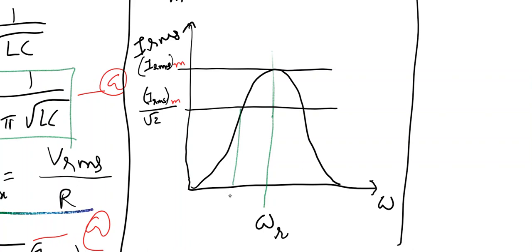So let us label them as omega 1 and omega 2. So when the source angular frequency becomes either omega 1 or omega 2, current will assume this value I_rms max by root 2, and then power will become half. Because power is proportional to I square, so if you want P by 2, it has to be I square by 2, and then current will be I by root 2. So the I which we are talking about here is I_rms max.